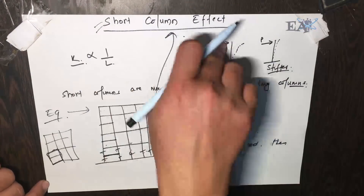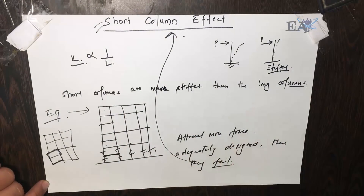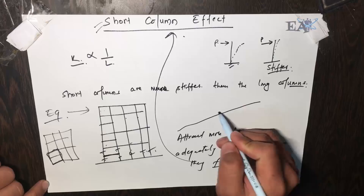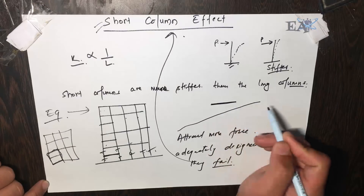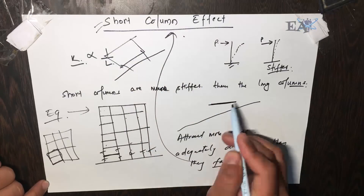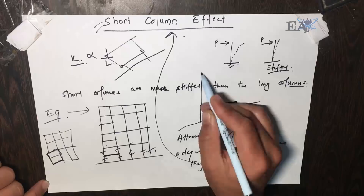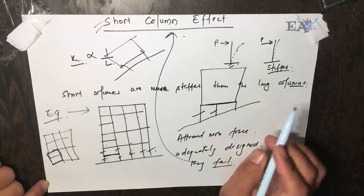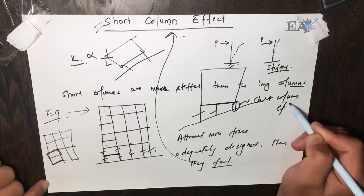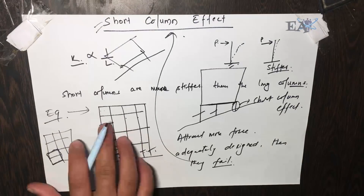Sometimes this short column effect can also be seen in buildings built on sloped land. For example, if you're building on a slope, you need your ground floor or tie beam at the same horizontal level — you cannot have a tilted building. So you put columns of different heights here. The two longer columns are okay, but the shorter column shows the short column effect.